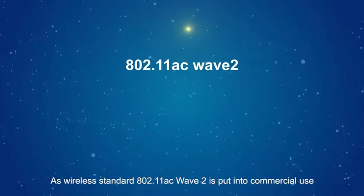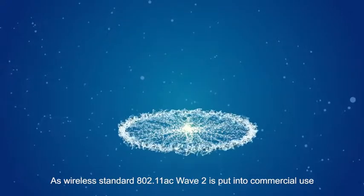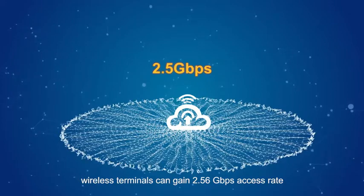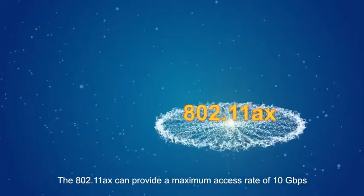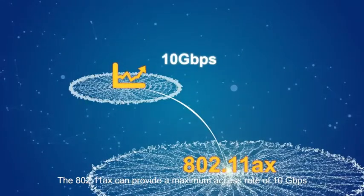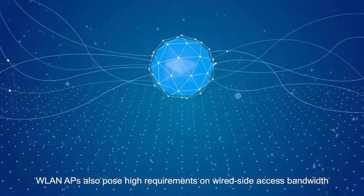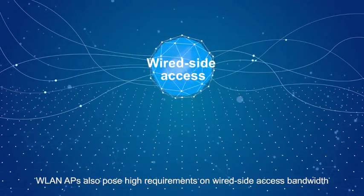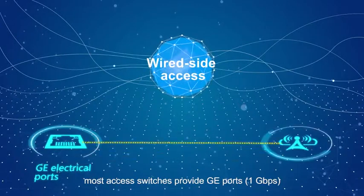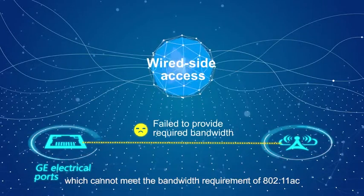As wireless standard 802.11ac Wave 2 is put into commercial use, wireless terminals can gain 2.56 gigabytes per second access rate. The 802.11ax can provide a maximum access rate of 10 gigabytes per second. WLAN APs also pose high requirements on wired side access bandwidth. Currently, most access switches provide GE ports at 1 gigabit per second, which cannot meet the bandwidth requirement of 802.11ac.